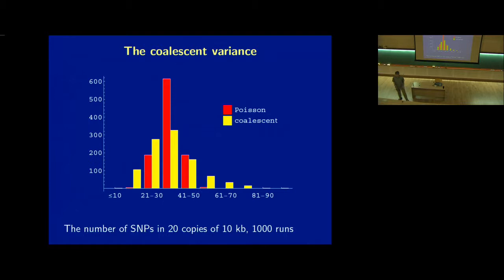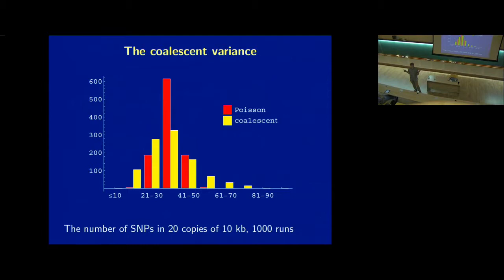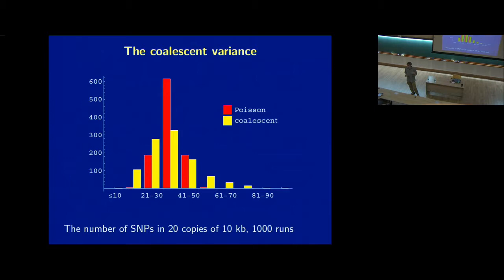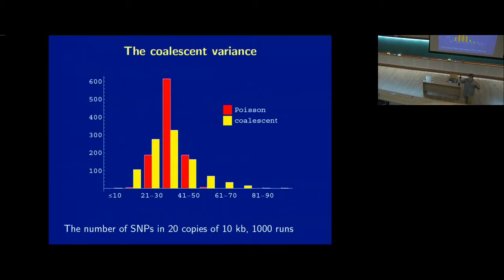So we left off yesterday. What I've been trying to explain is the main use for the coalescent has been as a neutral null model for everything. When it was first invented, for simple cases you can derive lots of analytical results using this model, but it's also an extraordinarily efficient simulation tool. People typically use it to simulate the simplest possible expectation and then look for deviations.